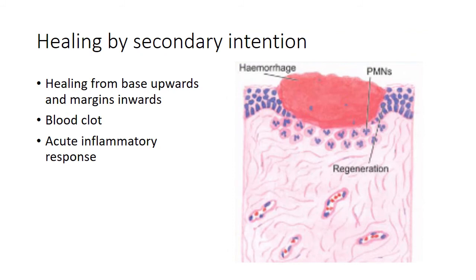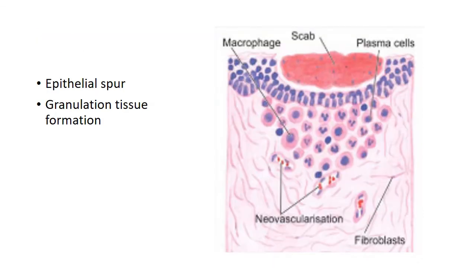Now coming to healing by secondary intention. Here the basic difference is that healing takes place not just from the margins inwards, but also from the base upwards — proliferation occurs from both margins inwards and from the base upwards. The sequence of events, just like healing by primary intention, includes the initial blood clot followed by an acute inflammatory response. The formation of epithelial spurs from the margins is also similar, except that it does not fully cover the surface until granulation tissue from the base has started filling the wound space.